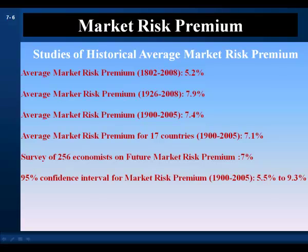Let's see where we stand. The average market risk premium over 1802 to 2008 was 5.2%. Over 1926 to 2008 it was 7.9%. Over 1900 to 2005 it was 7.4%. The average across 17 countries over 1900 to 2005 was 7.1%. A survey of 256 financial market economists on their opinions regarding the future expected market risk premium produced a median response of 7%. A 95% confidence interval from the 1900 to 2005 U.S. data produces a range of 5.5% to 9.3%.